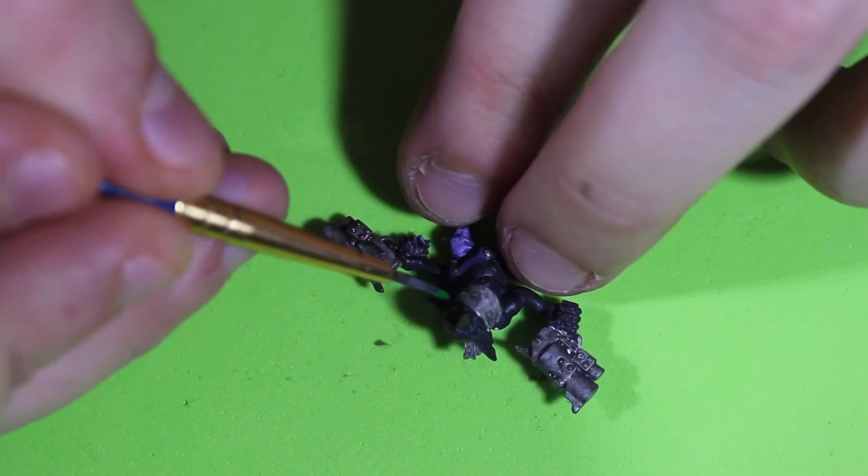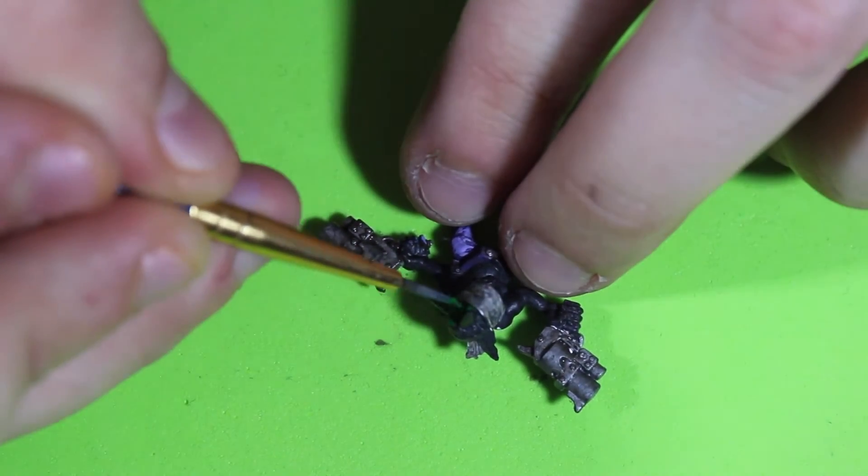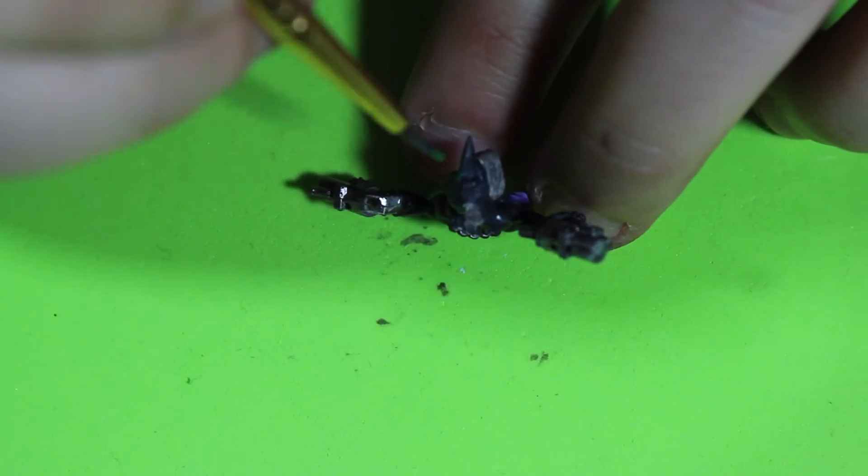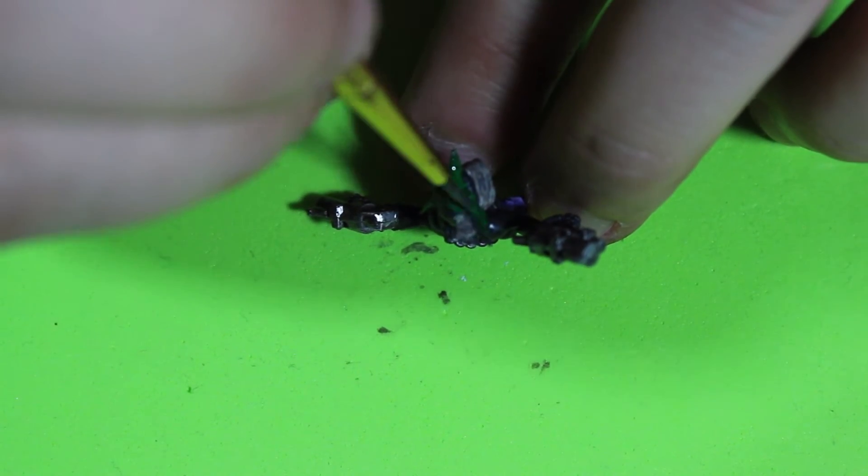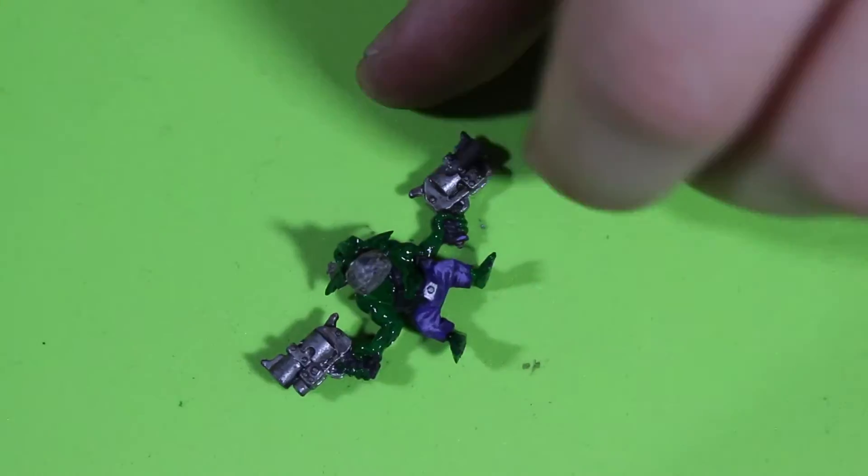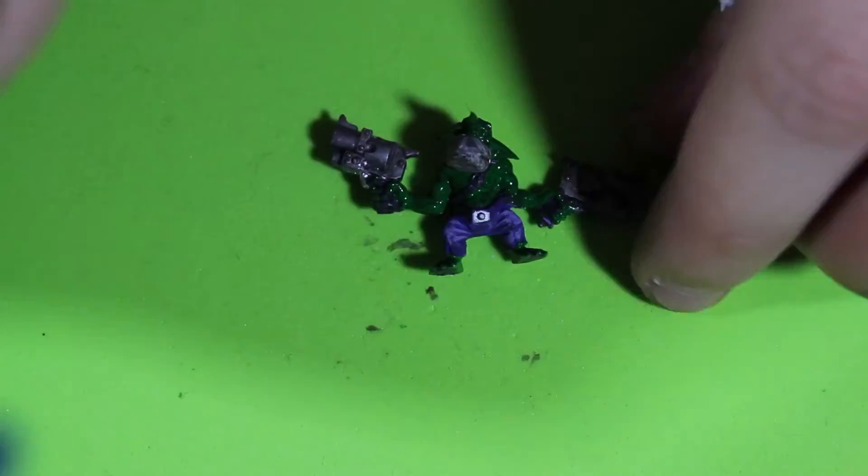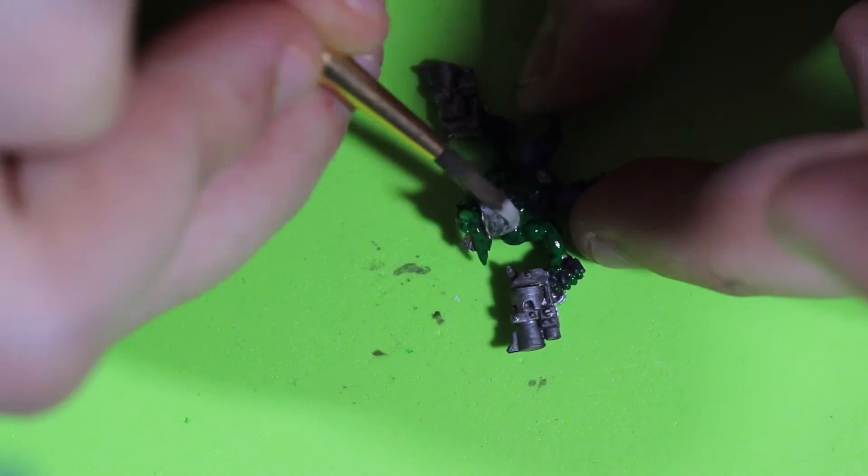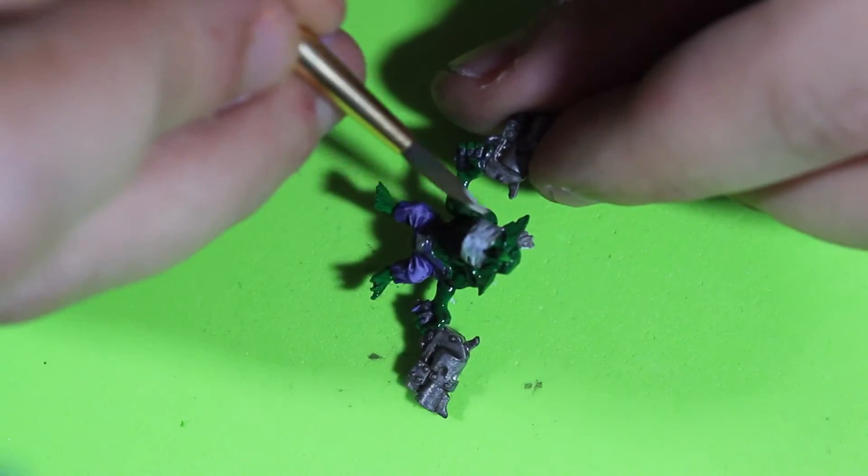As you see, the pants now have cool highlights to bring out the detail. This is the fun part - I took Testors green color and I'm painting the skin of the Gretchen green because it's an orc, that's what they're known for.